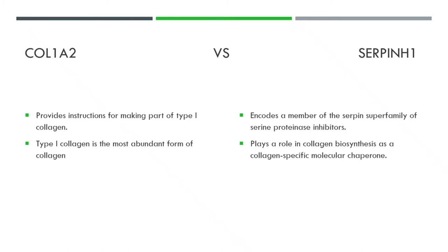To recap: the col1a2 gene provides instructions for making type 1 collagen, the most abundant form of collagen. The SERPINH1 gene is more involved in the production of collagen as a chaperone, rather than directly making it itself. The col1a2 mutation is the golden retriever type, which is dominant, and the SERPINH1 mutation is the dachshund type, which is recessive.